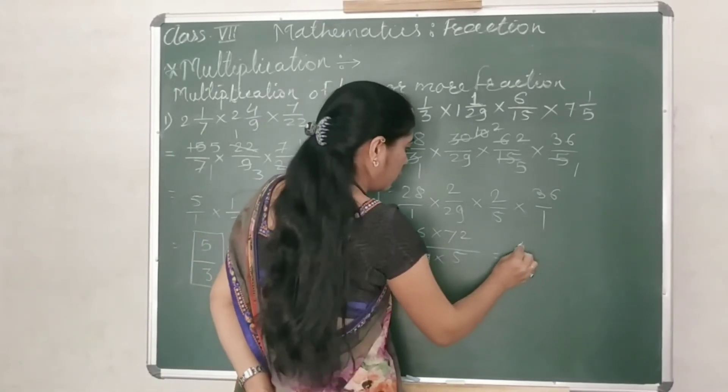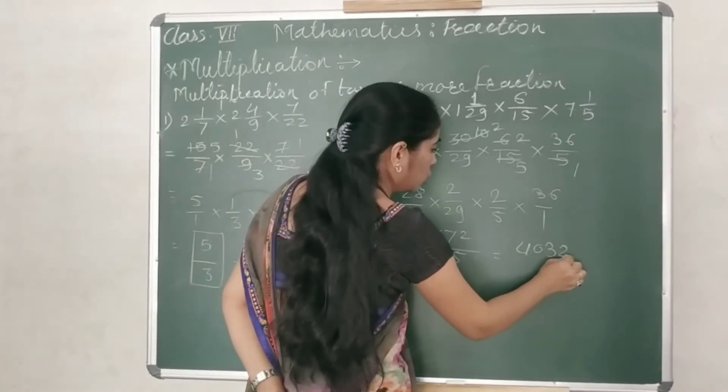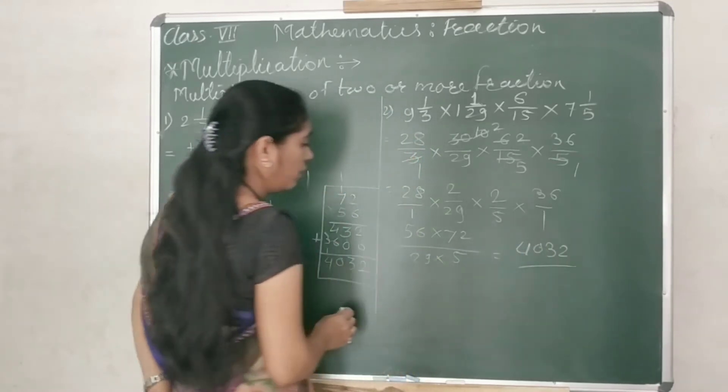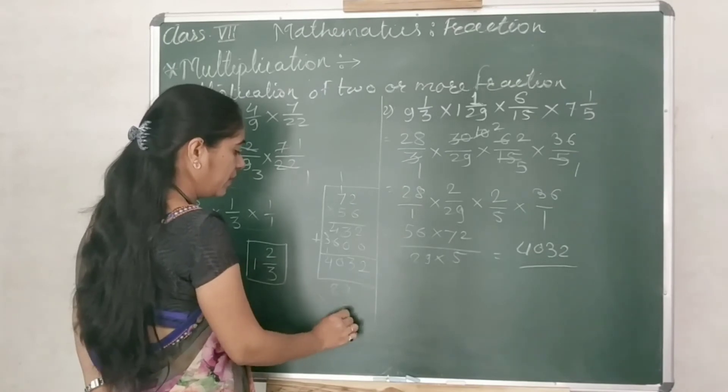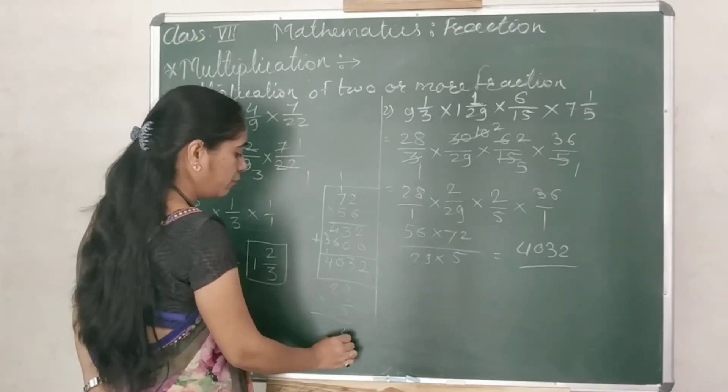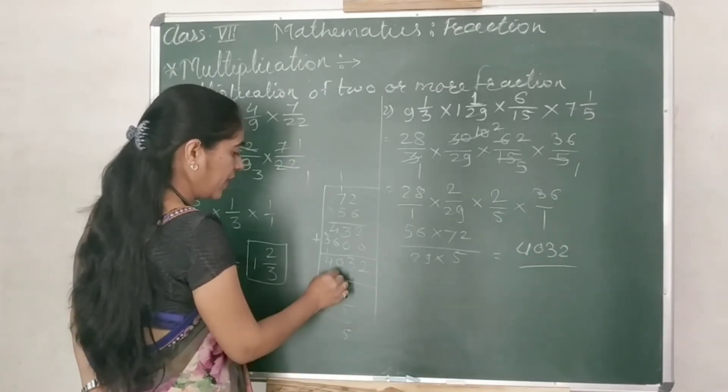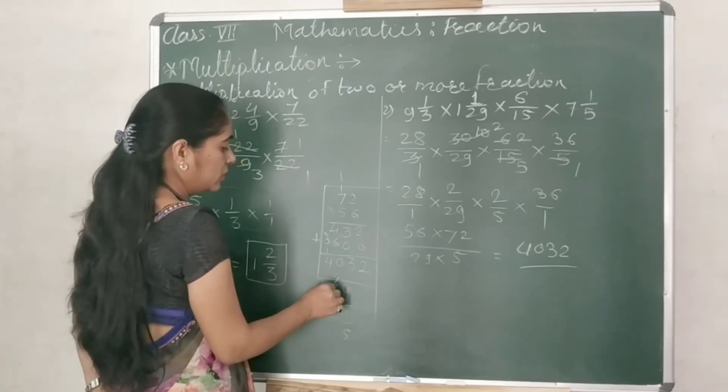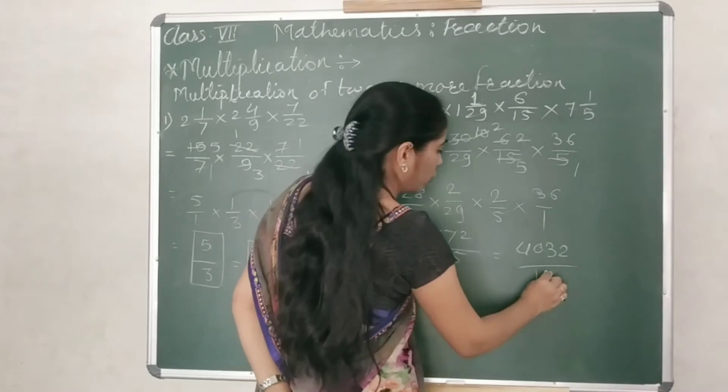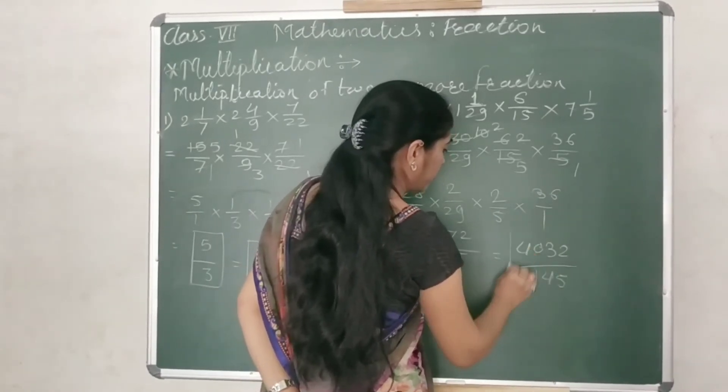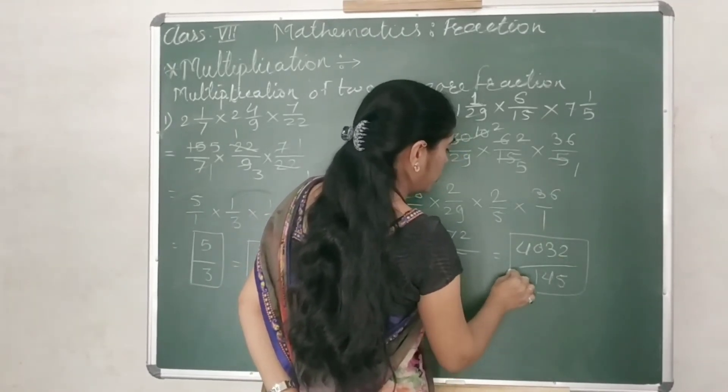4032, then 4032 upon 29 multiplied by 5. 29 multiplied by 5. 5 nines are 45, carry 4. 5 twos are 10, plus 4, 14. 145. This is your answer.